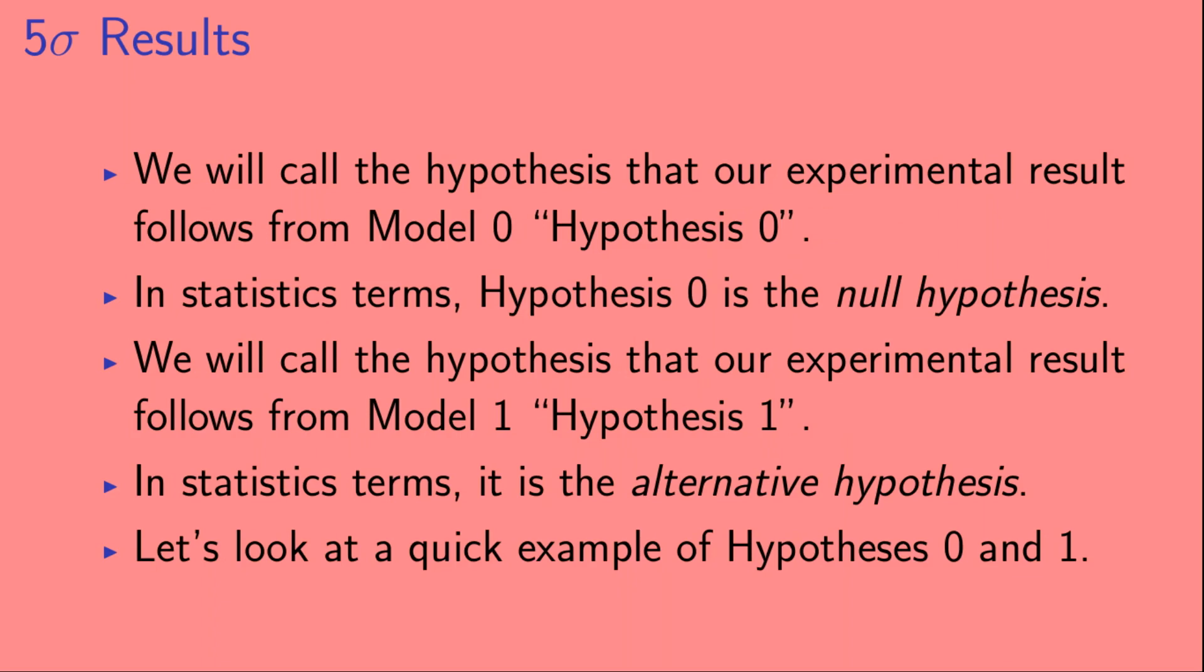We will call the hypothesis that our experimental result follows from model 0, hypothesis 0. In statistics terms, hypothesis 0 is the null hypothesis. We will call the hypothesis that our experimental result follows from model 1, hypothesis 1. In statistics terms, it is the alternative hypothesis. Let's look at a quick example of hypotheses 0 and 1.